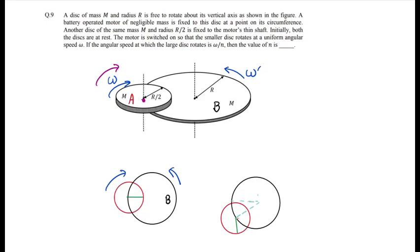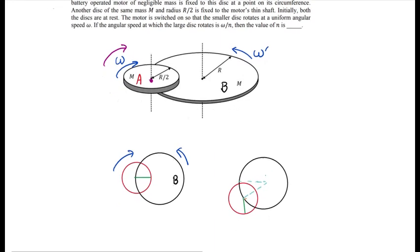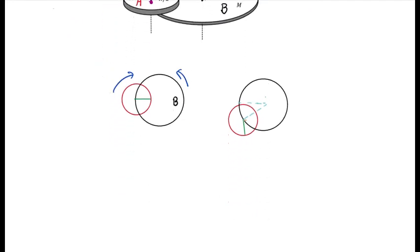We are talking about a frame which is rotating with B, which is rotating with omega prime angular velocity. We need to find omega prime. Let us understand this. Let us say disc B is stationary, not rotating, and just disc A is rotating.